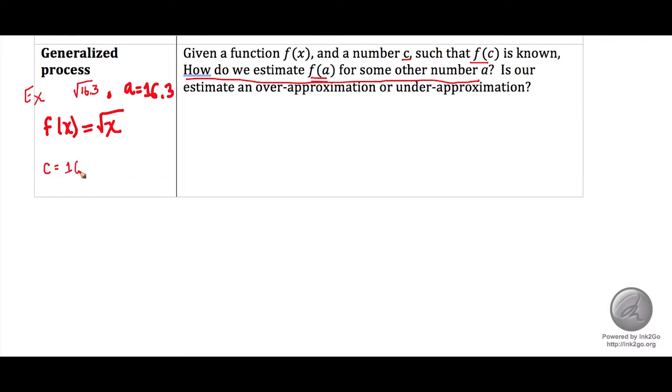So we want to estimate the square root of 16.3. We have this function, that's the square root function. We don't know what the square root of 16.3 is. So we use some other point that we know for sure as a way to help us estimate the point that we don't know.